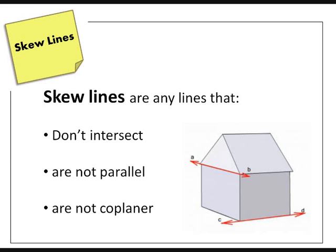Skew lines are any lines that don't intersect, are not parallel, and are not coplanar.